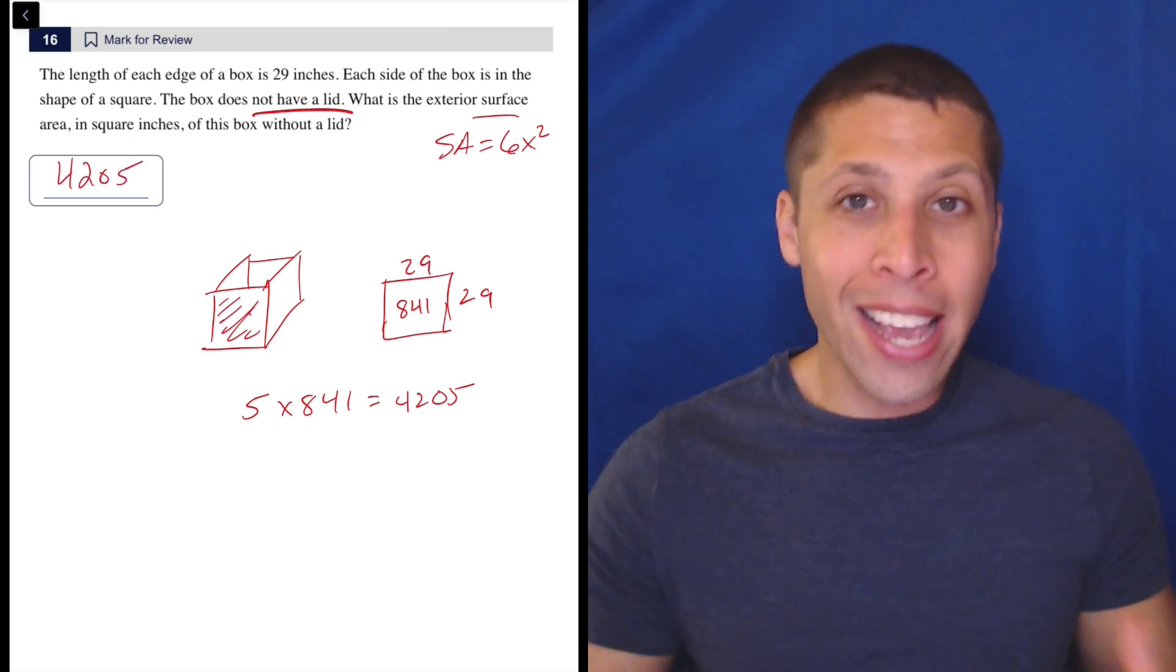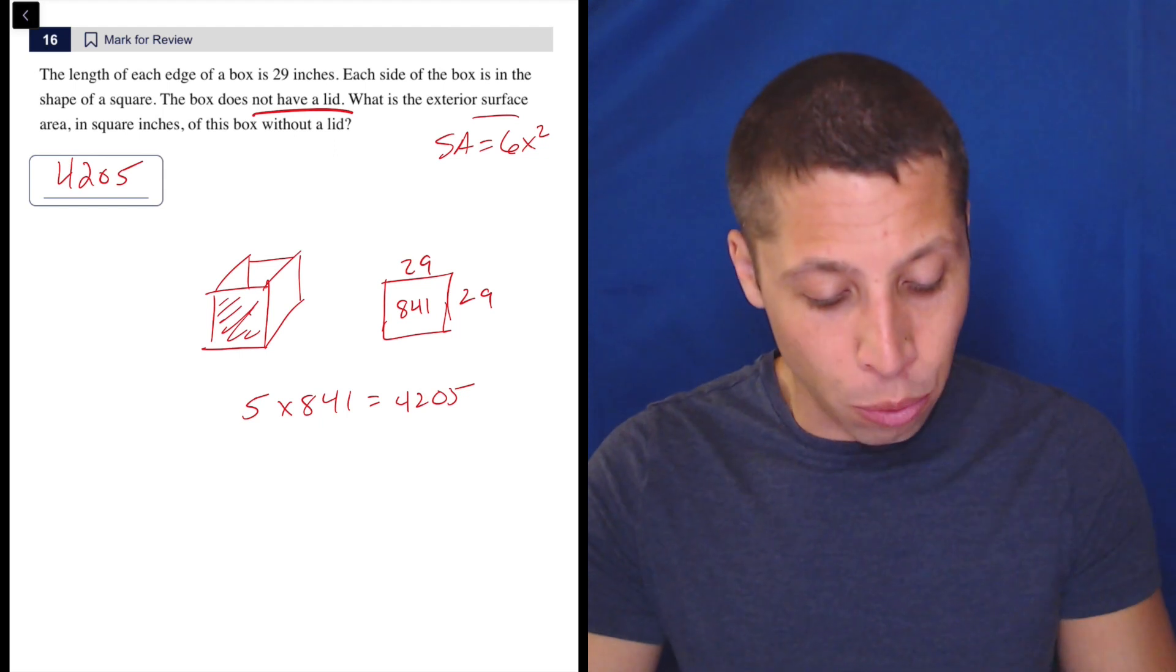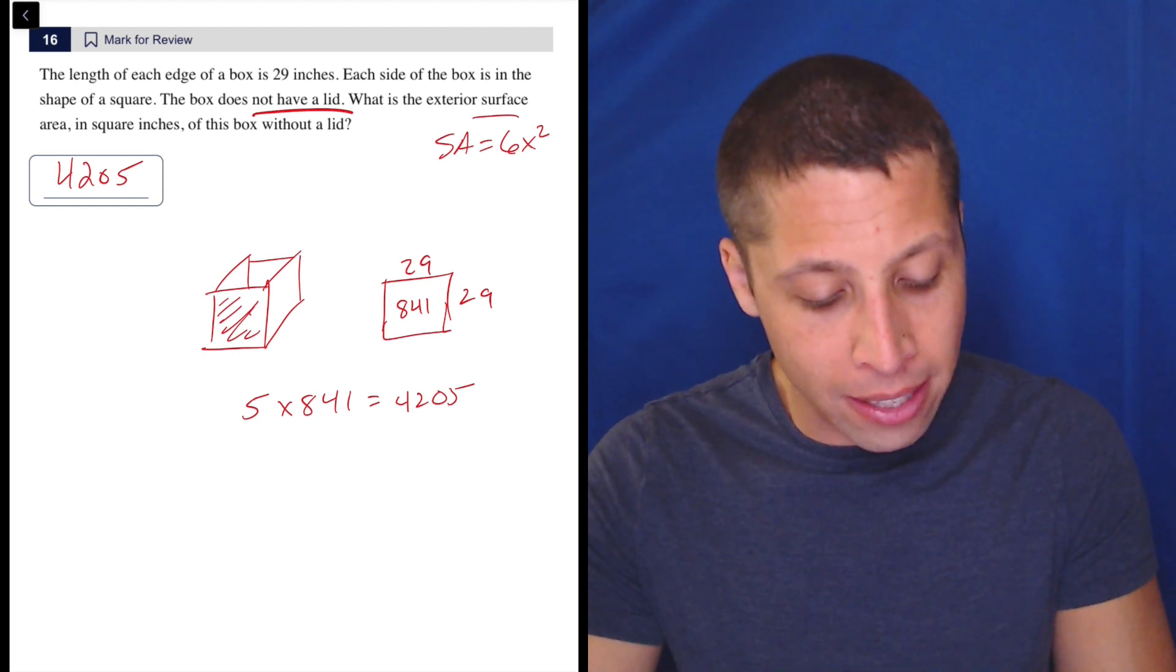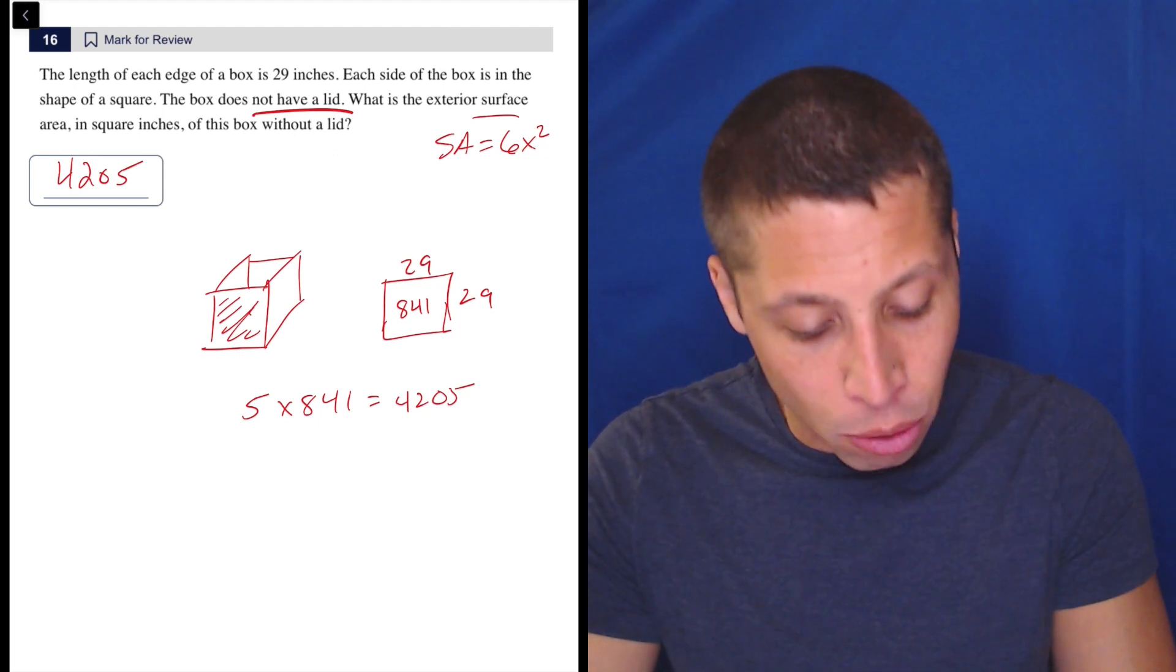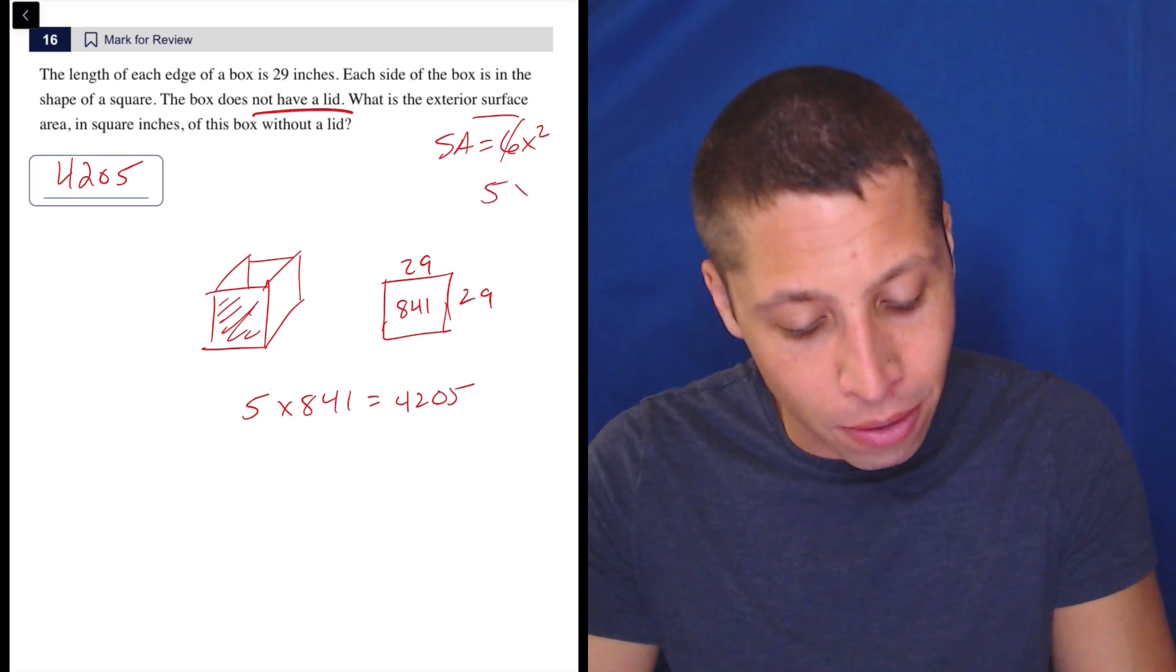So in a way, it ends up being very similar to the original formula. We would just need to make the addendum that it's not 6x squared, it's 5x squared.